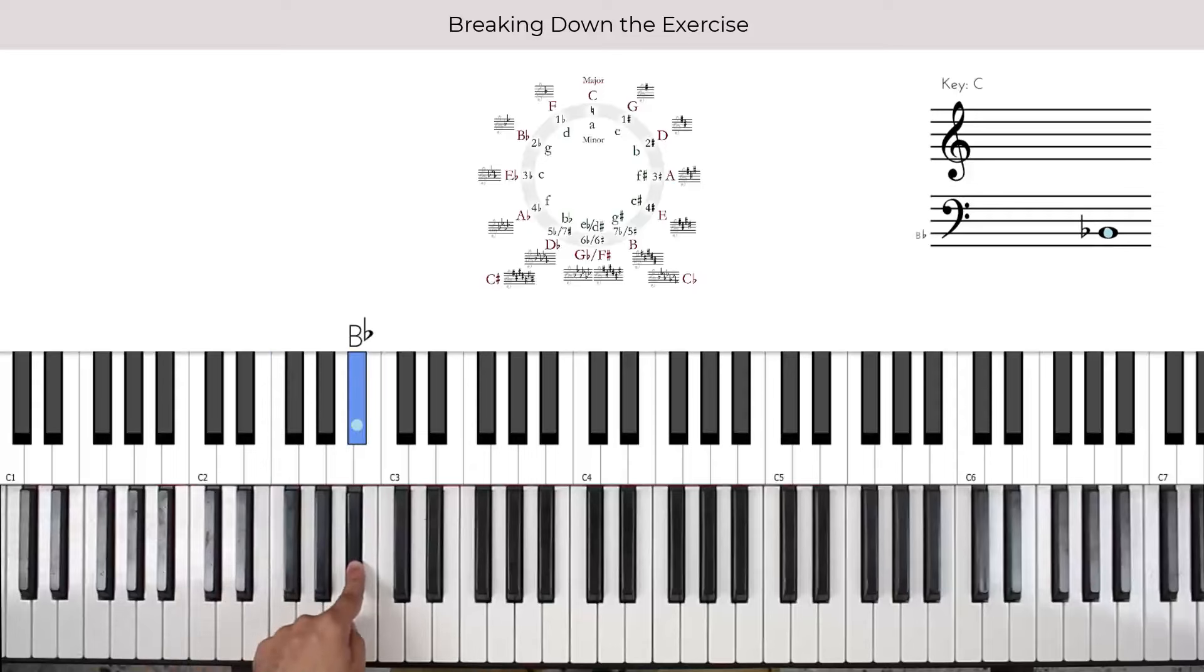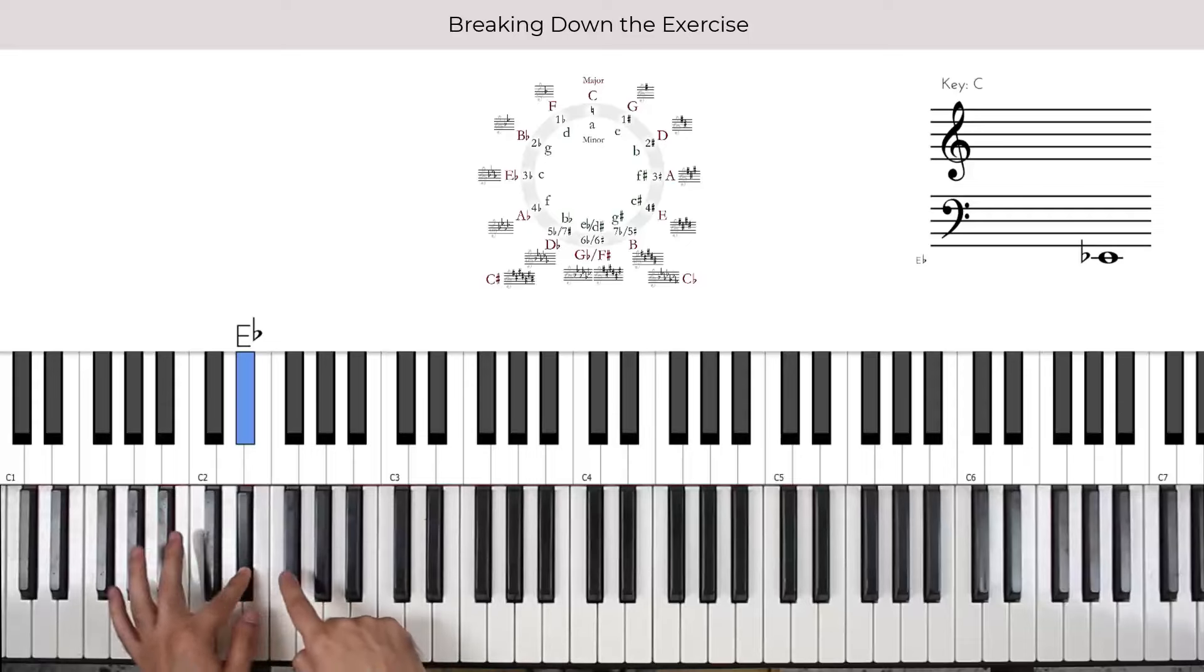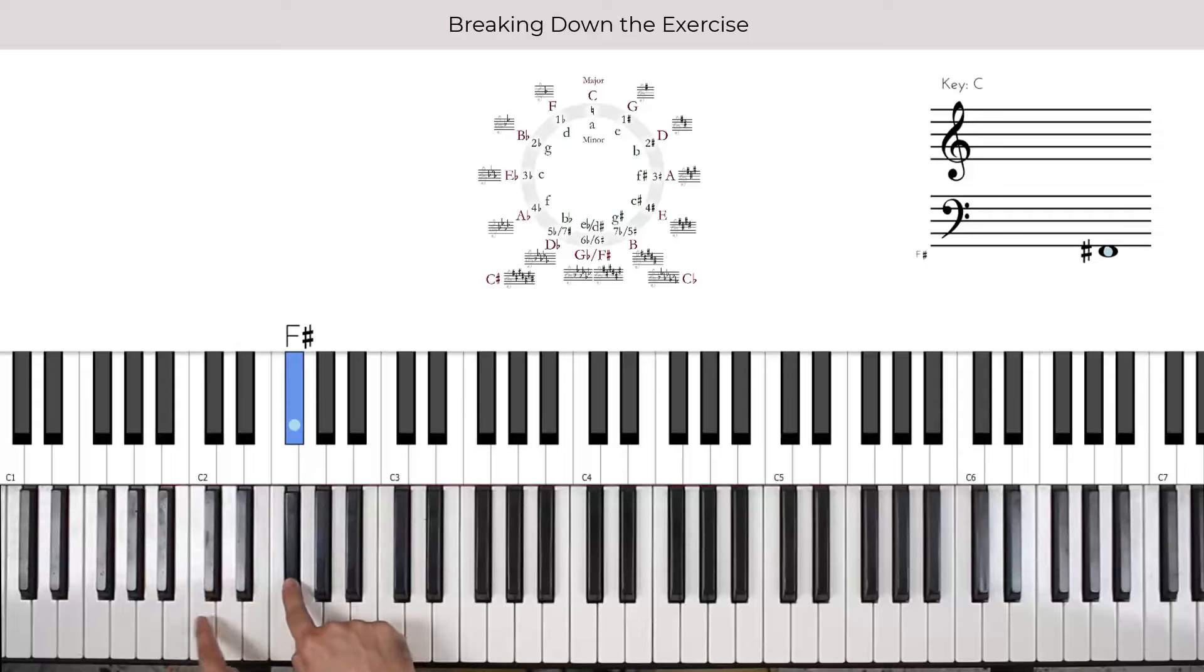Going down a perfect fifth, we get an E-flat. Another perfect fifth, we get an A-flat, but we're going to play it up here. D-flat, G-flat, B, E, A, D, G, C. So, I'm really just playing the circle of fifths.